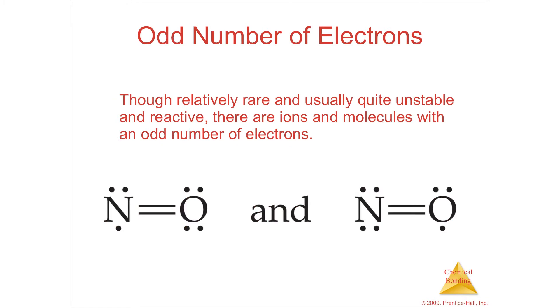So the first obvious one is if you have an odd number. If you have an odd number, you're just going to not have an octet. So in the case here, I've got nitrogen oxide. Nitrogen has five. Oxygen has six valence electrons. That's 11 valence electrons. So you can't make them both have eight if you have an odd number like that.